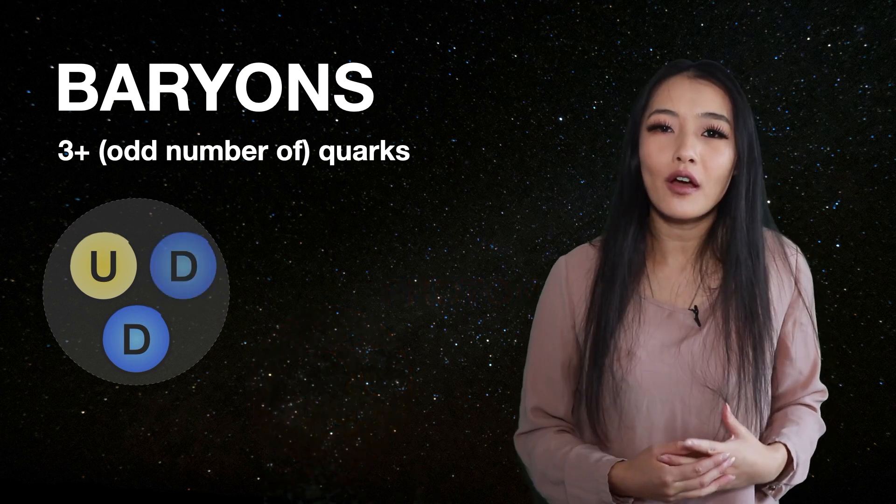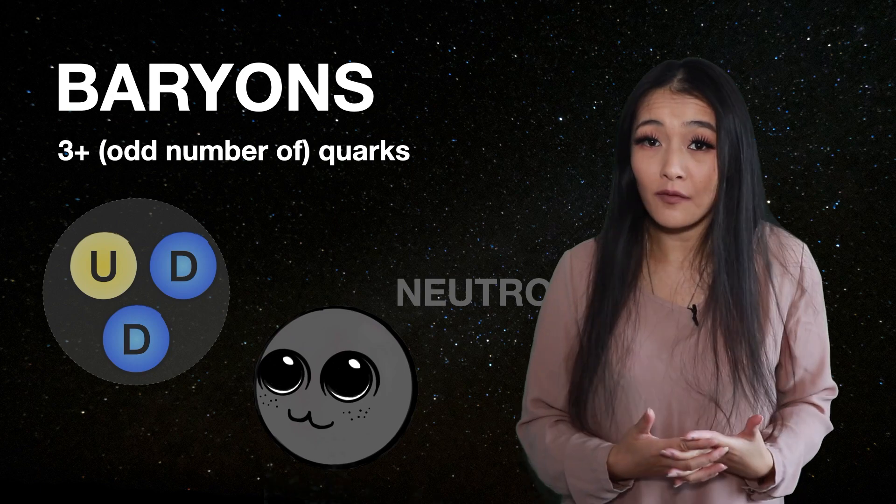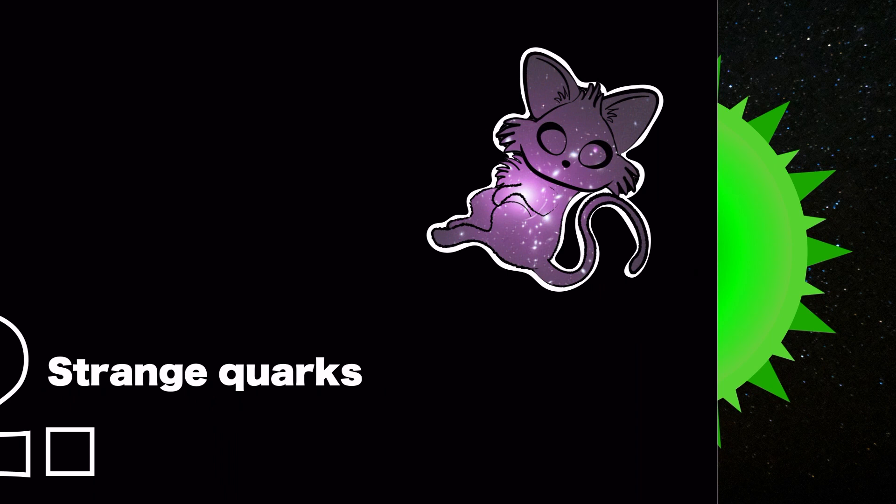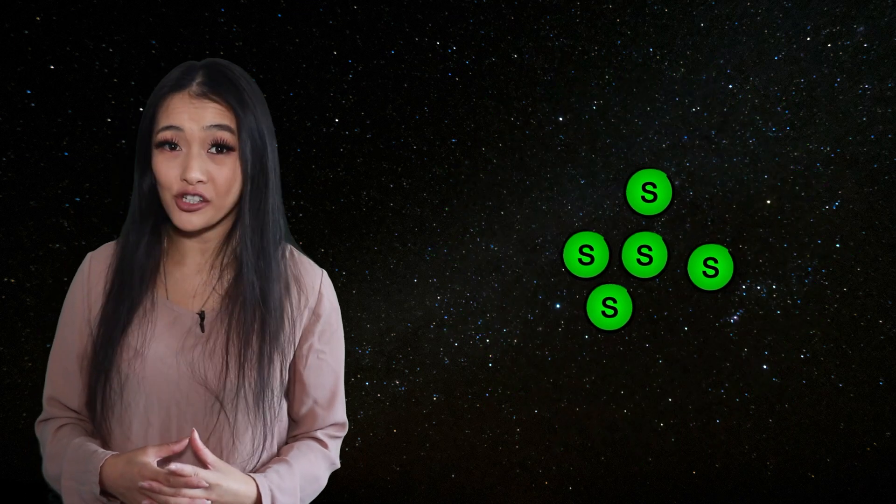And the neutron is made up of two down and one up quark. They are both mixed types of baryons. As you might have guessed, the strange star is made up of strange quarks. Strange quarks can be found in strange matter.